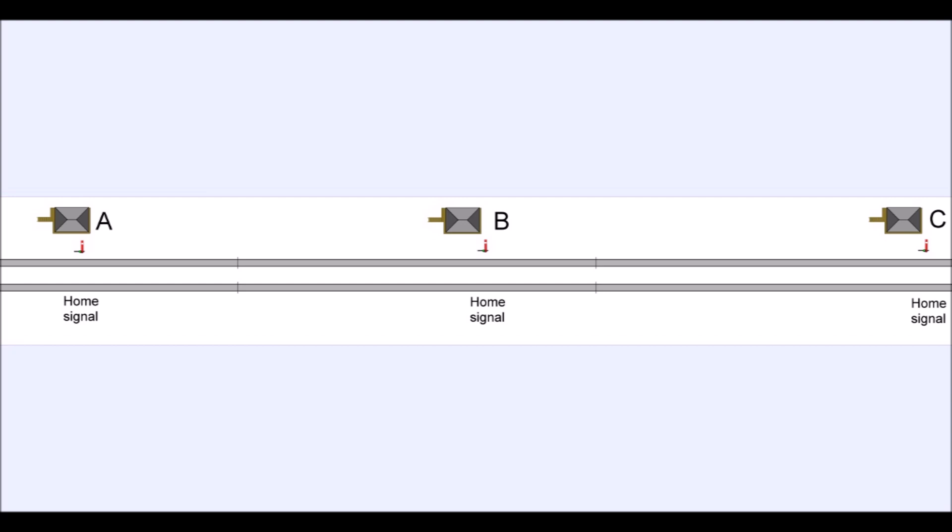If you want to know signal box codes and how that worked, there is a video on the channel about it. Once the train gets to B, he offers it to C. If C accepts it, B can pull off his signal and the train will pass that red signal outside signal box B and progress to signal box C. That's quite simple.